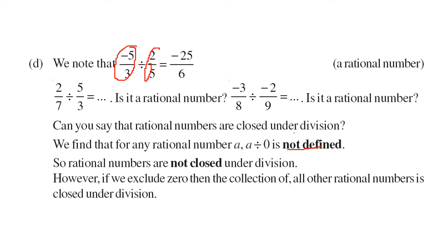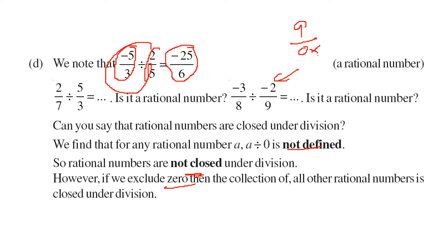If you exclude 0, the rational numbers are closed under division as well. For example, we get minus 25 by 6, which is a rational number. As stated, you cannot divide by 0, so you just have to exclude 0 to indicate that this operation gives you a rational number — rational numbers are closed under division when 0 is excluded.